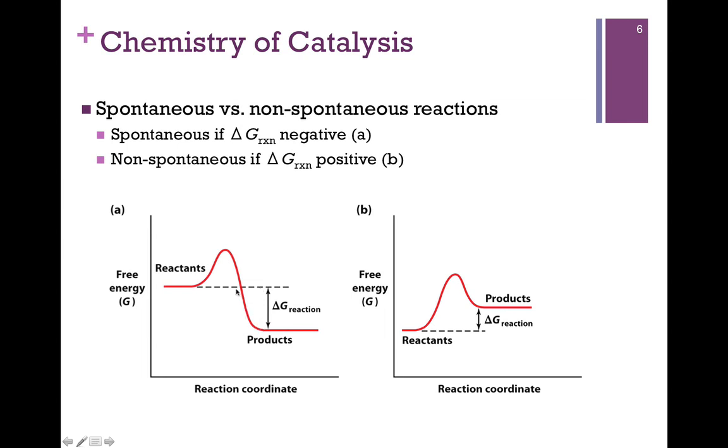Notice that the delta G of the reactions is simply the energy level of the products minus the reactants. And that will be the same no matter how high or low that energy hill is. It has nothing to do with the transition state. It's simply the energy level of the products minus the reactants.